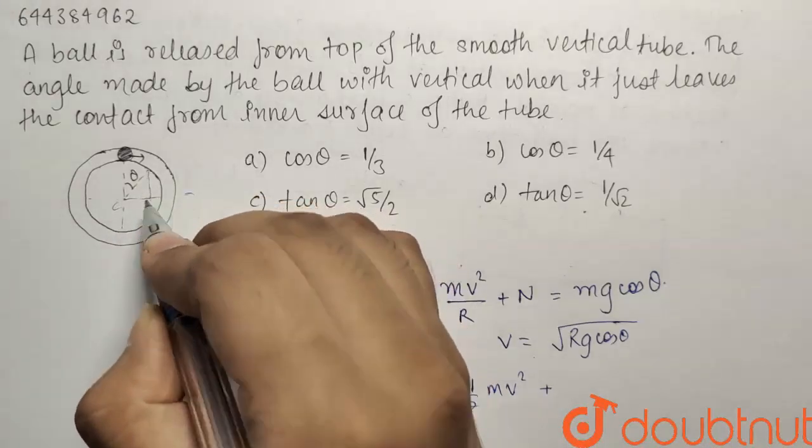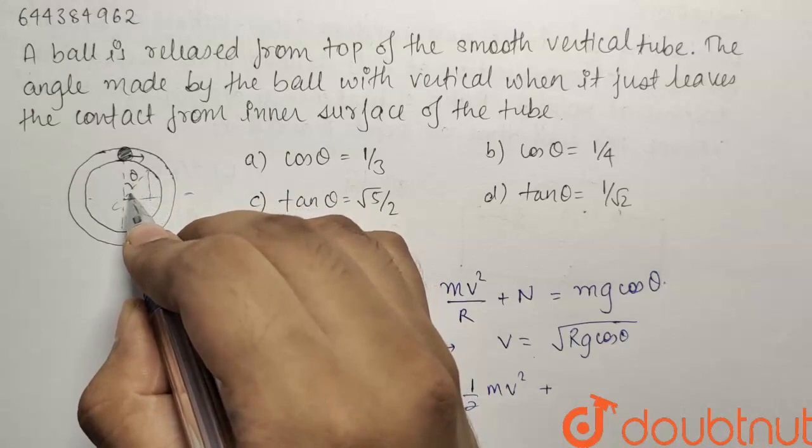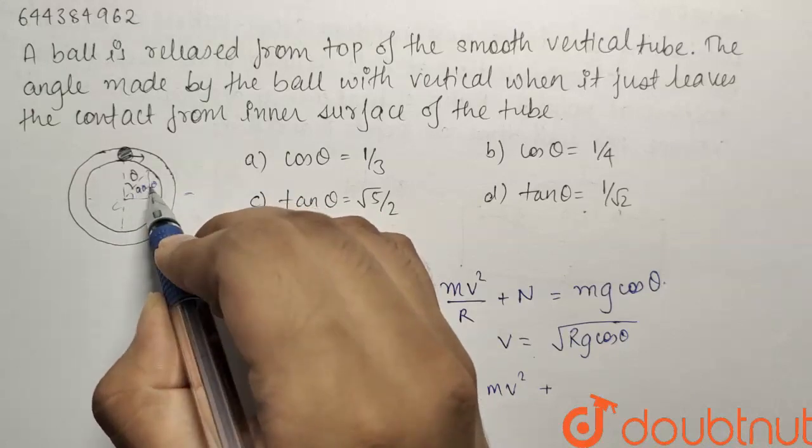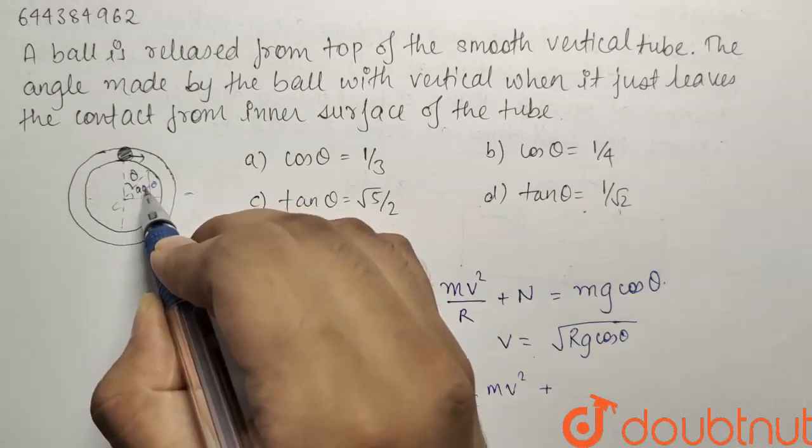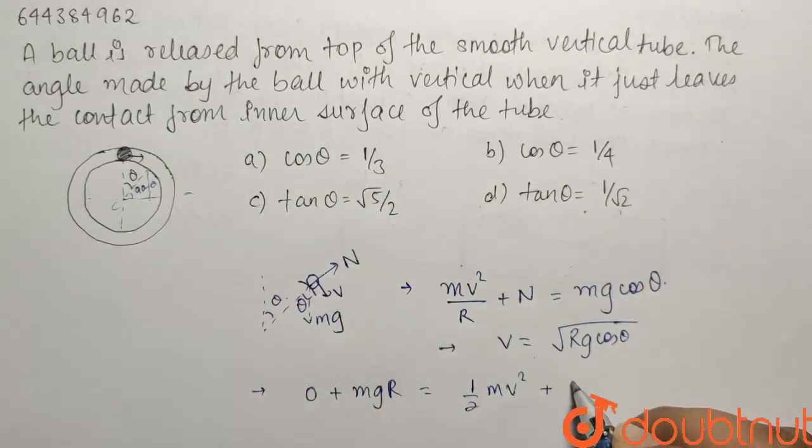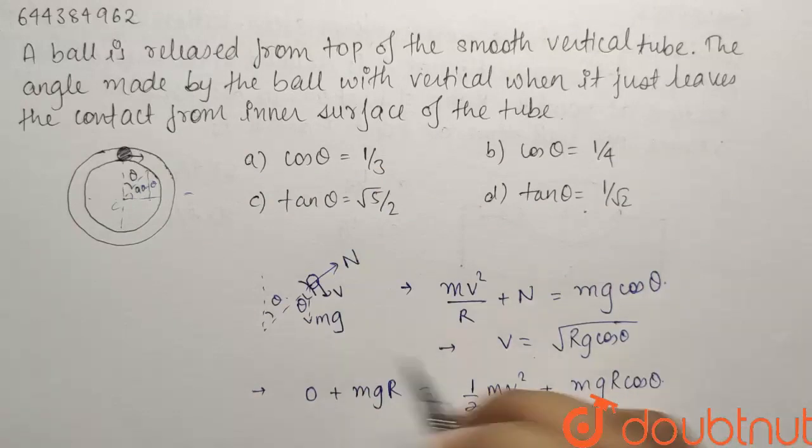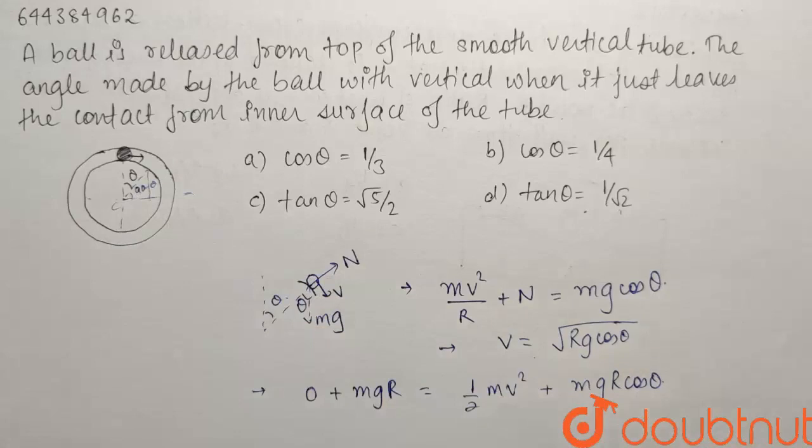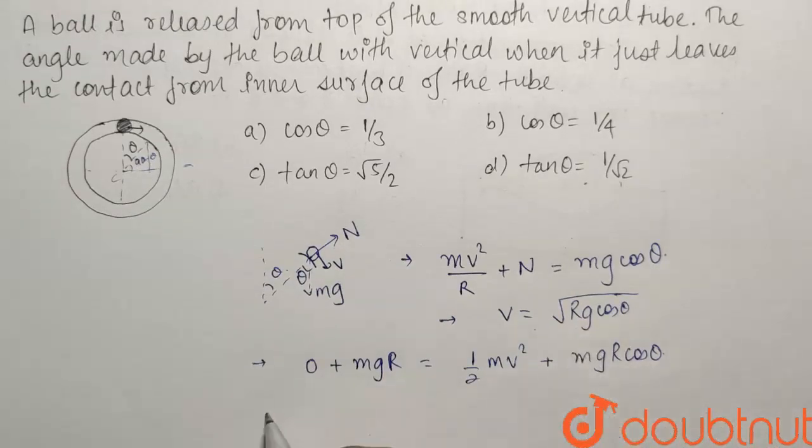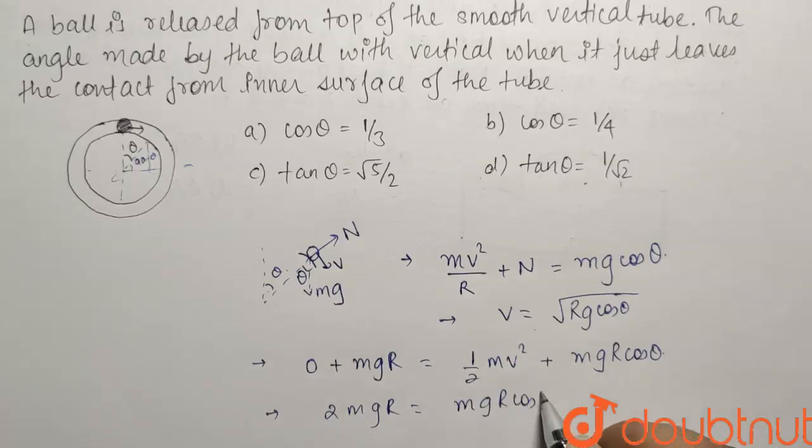This height will be equals to, this is your theta, this is your 90 minus theta. So this height will be r sin 90 minus theta that is r cos theta itself. So it will be equals to mg r cos theta. If I simplify this by putting the value of v square, let us multiply the whole equation by 2. So it will become 2mgr equals to mg r cos theta plus 2mgr cos theta.